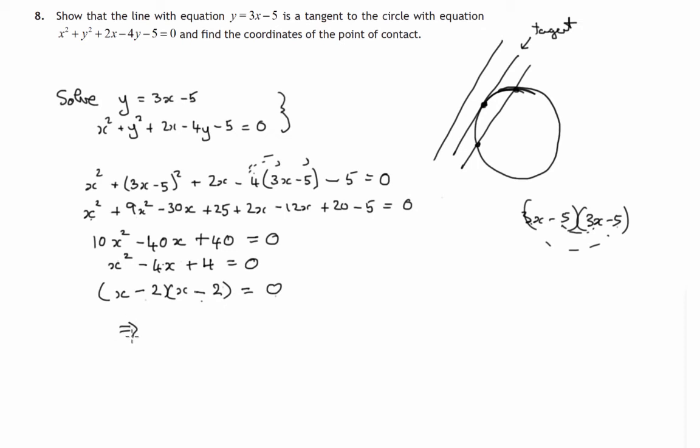So either x minus 2 is zero or x minus 2 is zero. In either case, x must be 2.